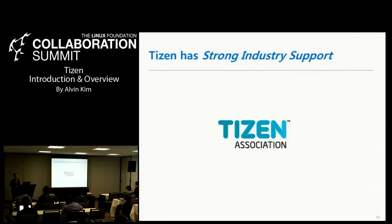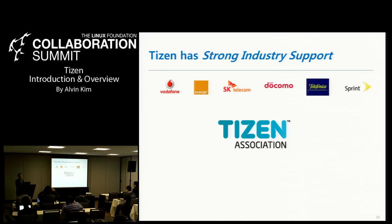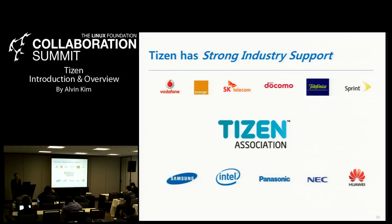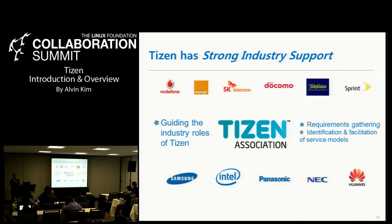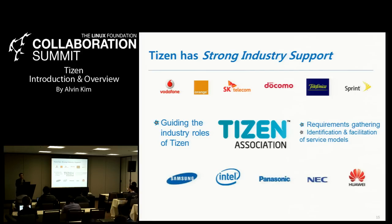Tizen has strong industry support. There is a Tizen Association with 12 members currently, from operators, manufacturers, and chip vendors. They guide the industry role, gather requirements for Tizen, and identify or facilitate service models. We frequently discuss together by conference call or face-to-face workshops how to improve the Tizen ecosystem as a whole.